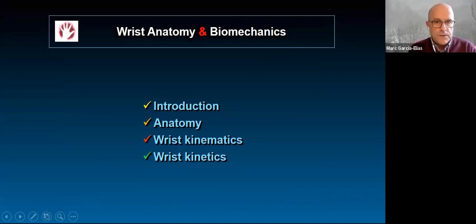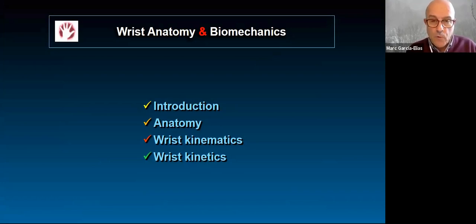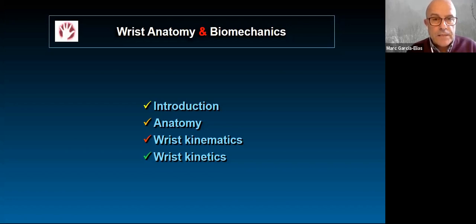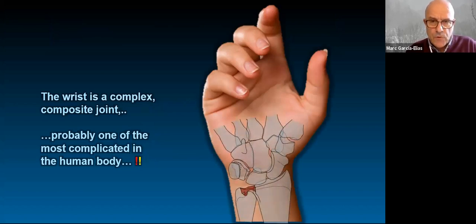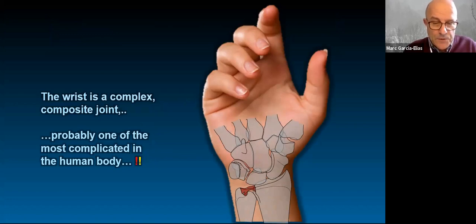I've been asked to review what's needed in the field of anatomy and biomechanics of the wrist. I'll share some ideas on how the carpal bones move — wrist kinematics — as well as how much load this articulation can sustain without suffering injury. So we'll be talking about kinematics and kinetics. It's not an easy articulation to understand and much less to master. Probably it's one of the most complex composite joints in the human body.